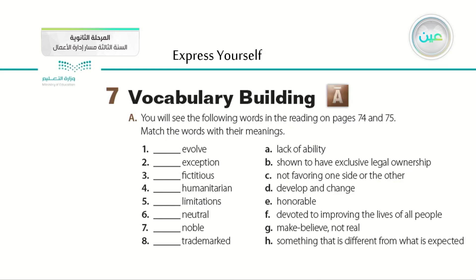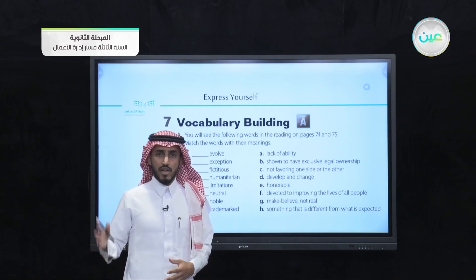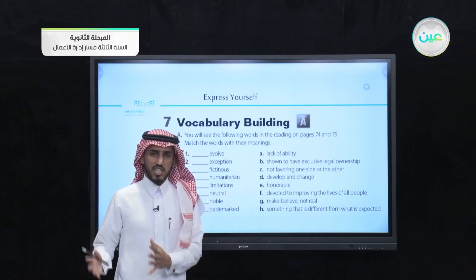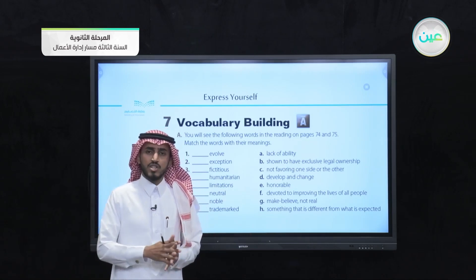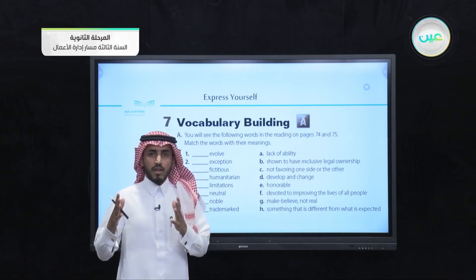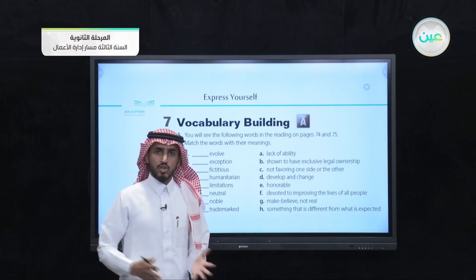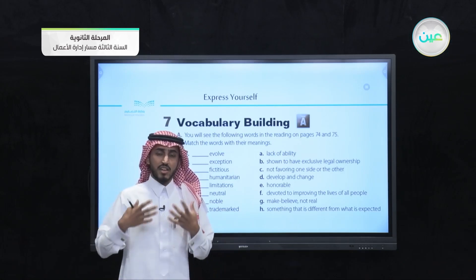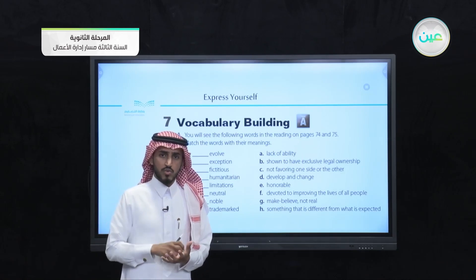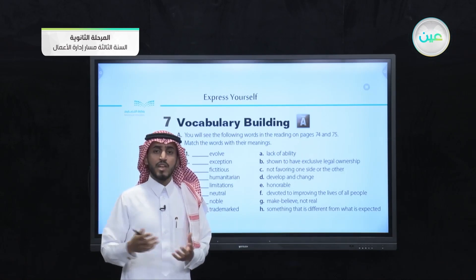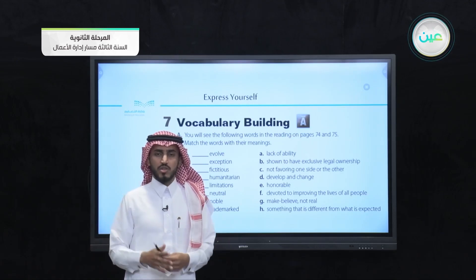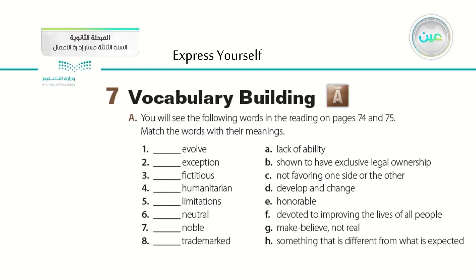After that, we went to the vocabulary building part. On the left side we have eight words, and on the other side we have eight definitions, explanations, and synonyms. We listened to the essay and learned how to guess the meaning of each word from context. Then we matched the words with their suitable definitions.